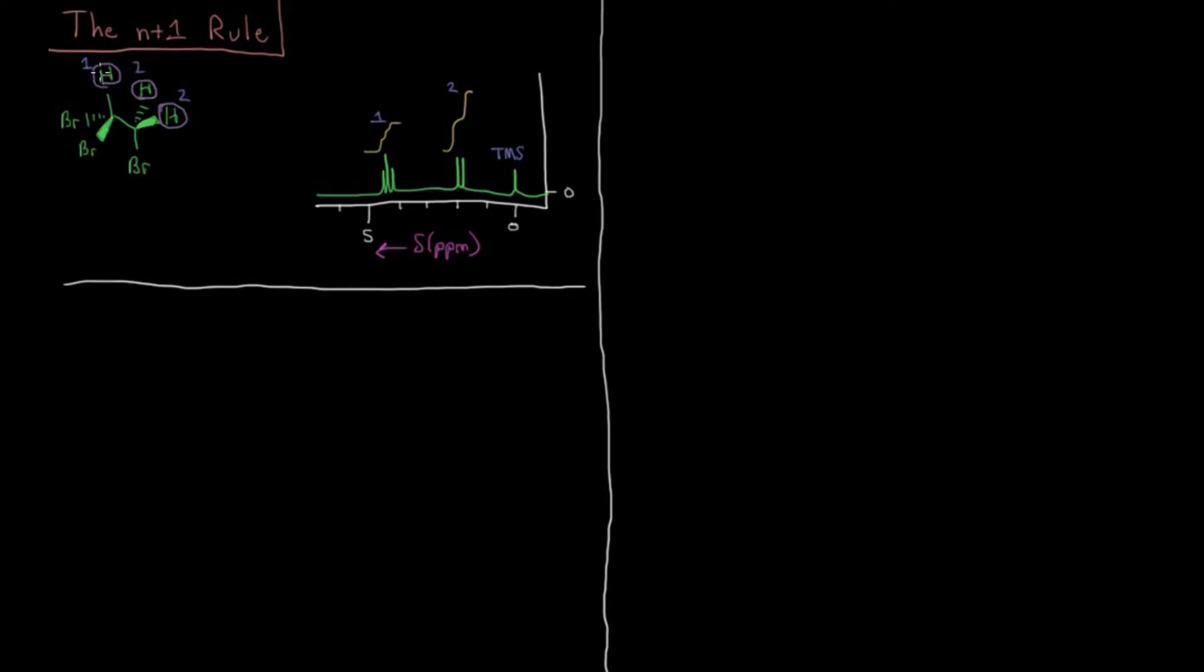Proton 1 is next to 2 chemically equivalent protons, and it splits into this pattern that we call a triplet. We have our 2 chemically equivalent protons on carbon 2 which are next to carbon 1, and they split into what we call a doublet. As we can see on the spectrum these peaks are integrated. This peak integrates to twice the value that this one does, so this is our 2 protons and this one is our 1 proton. We want to explain why we observe this type of pattern.